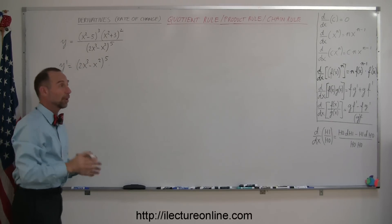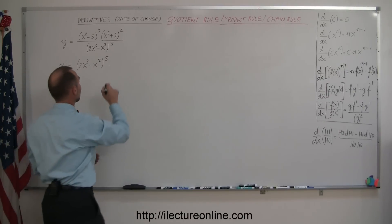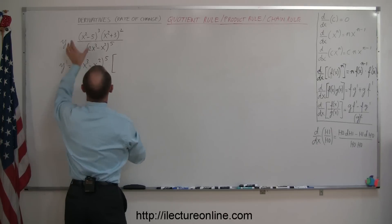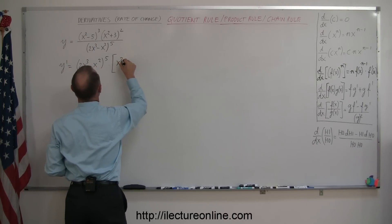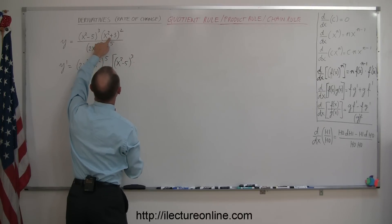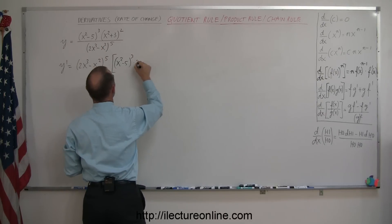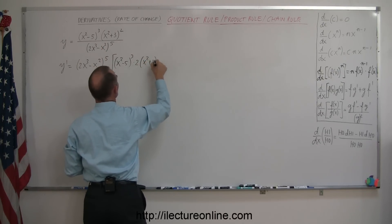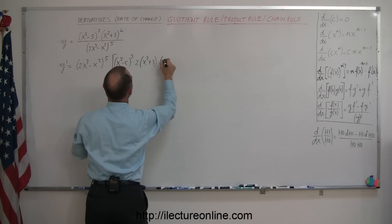Now the numerator is a product, so we have to use the product rule for that. So times the first, which is x squared minus 5 to the third power, times the derivative of the second. There we use the chain rule, so it's 2 times x squared plus 3 to the first power, times the derivative of what's inside, which is 2x.